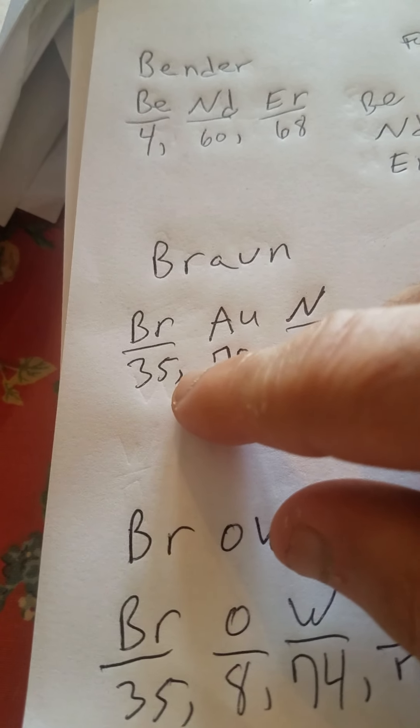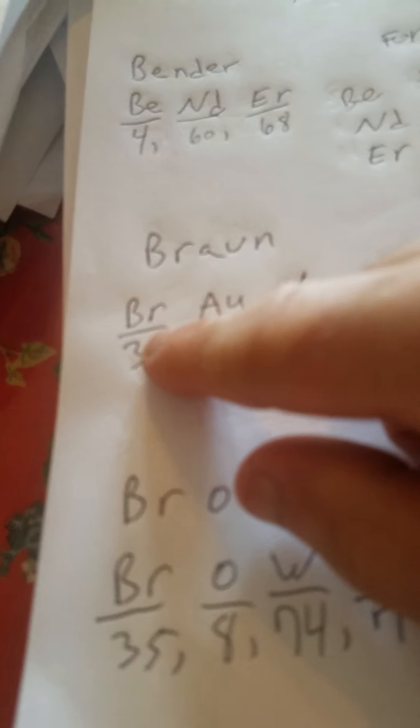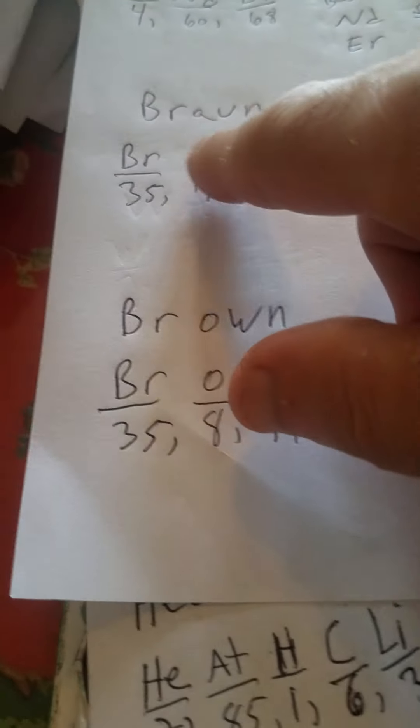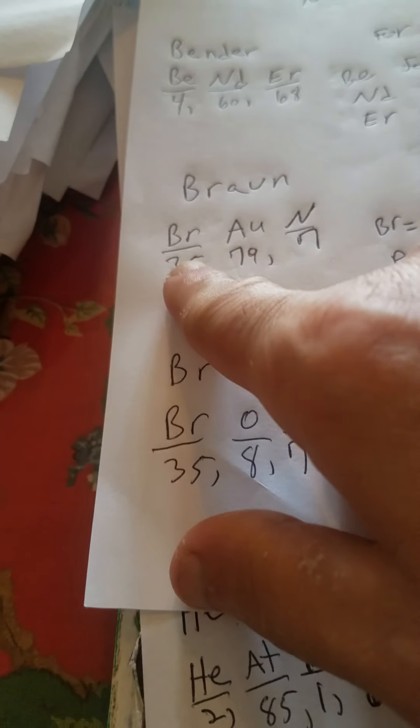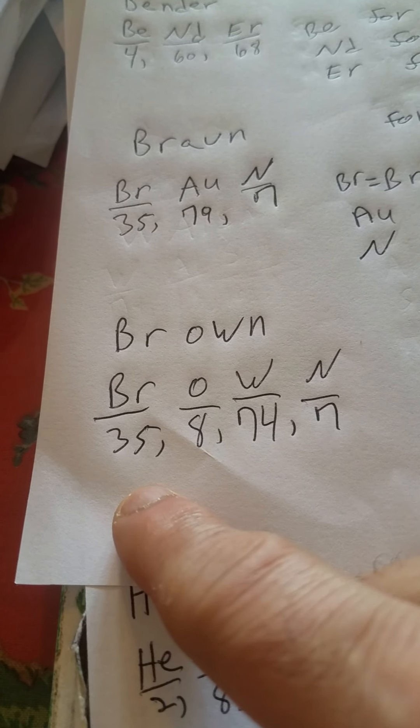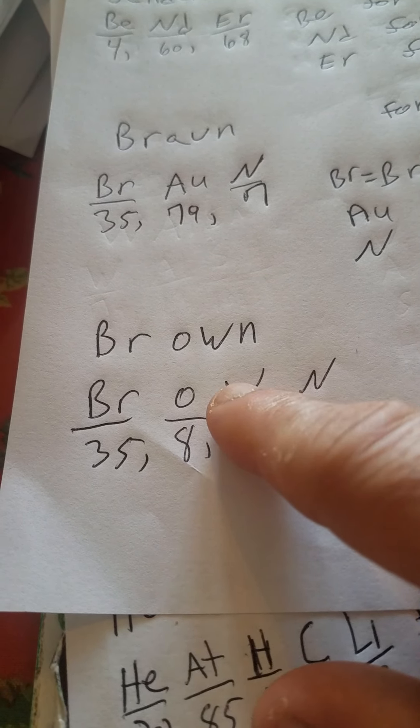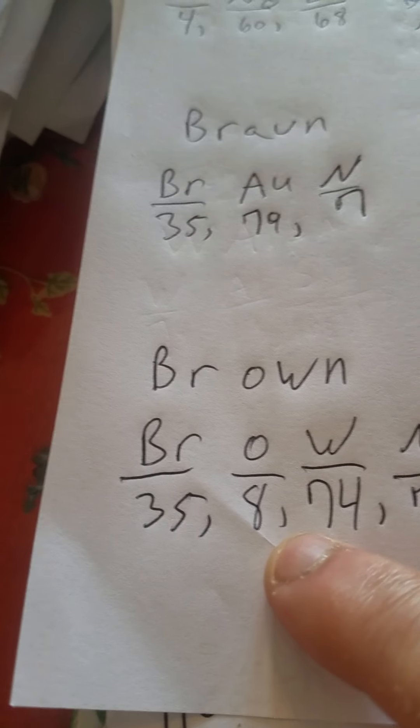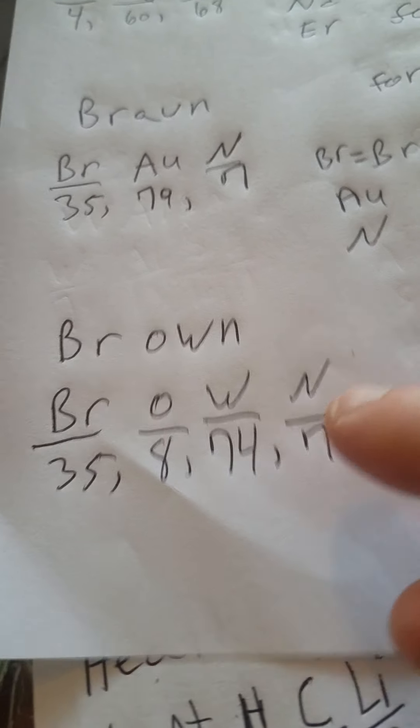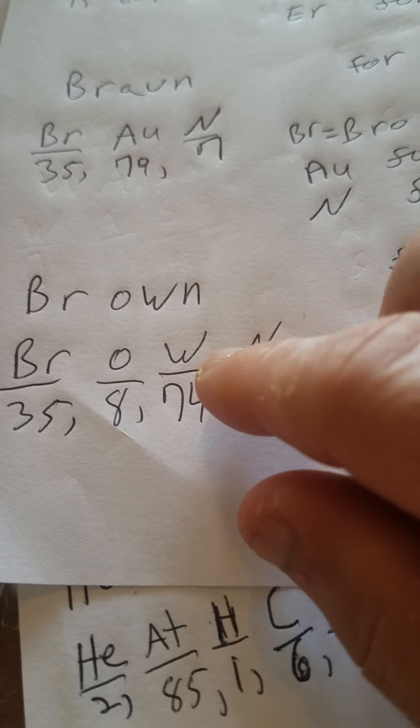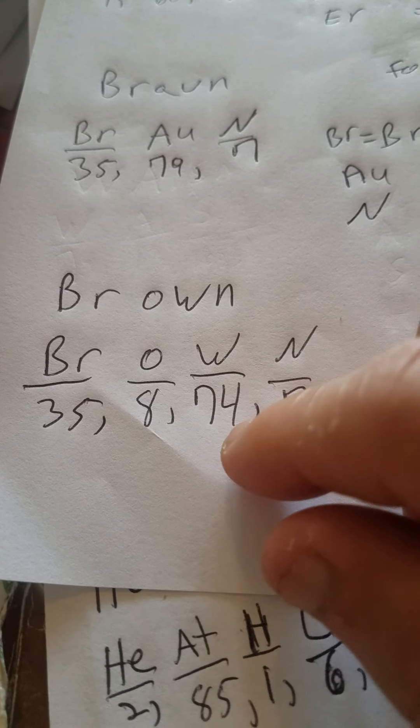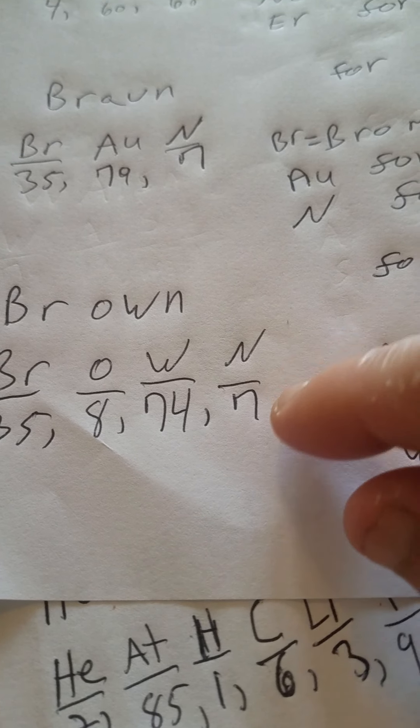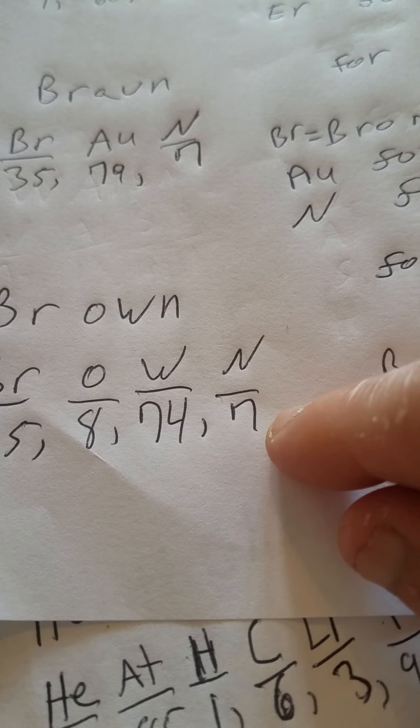And we got Brown. Capital B-R-O-W-N. We got 35 again for bromine, liquid at room temperature. Capital O for atomic number eight for oxygen. Capital W for tungsten—don't be confused, capital W is for tungsten, and that's atomic number 74. And capital N, seven for nitrogen.